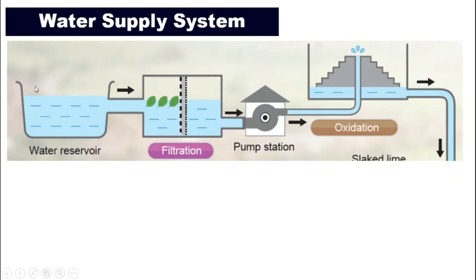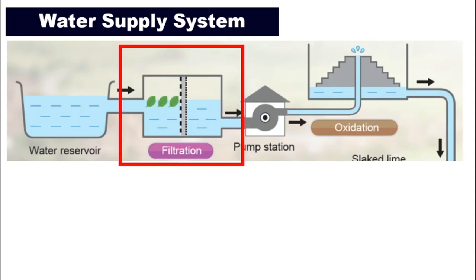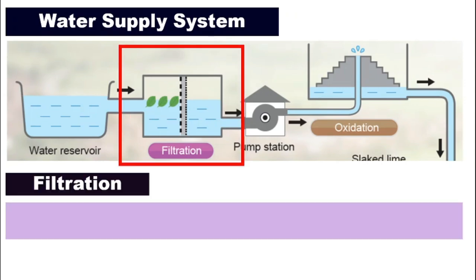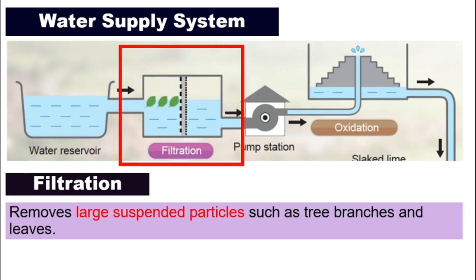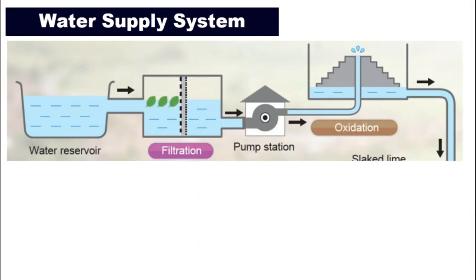The water will be collected from the water reservoir, or in some places they will be collected from rivers. After the water is collected, it will be channeled into our first tank, that is the filtration tank. This first tank will function to remove only the large suspended particles, such as tree branches and leaves. Those smaller ones will be taken care of in the later part of the system.